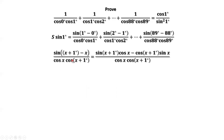Here we derive an important identity. The left-hand side equals sine of (x+1°) minus x, divided by cosine x times cosine (x+1°). The inside of the sine is x+1° minus x equals 1°, which gives sine 1° for each numerator on the right-hand side. We now apply the difference formula for sine: the numerator equals sine of the first angle times cosine of the second angle minus cosine of the first angle times sine of the second angle.